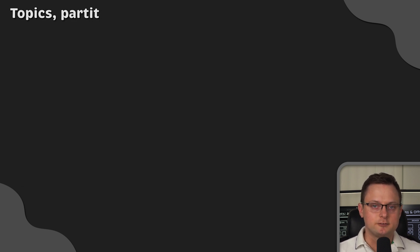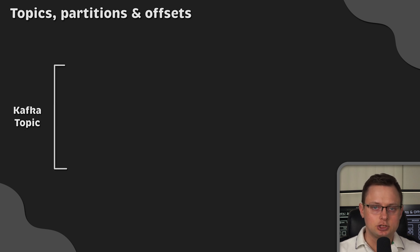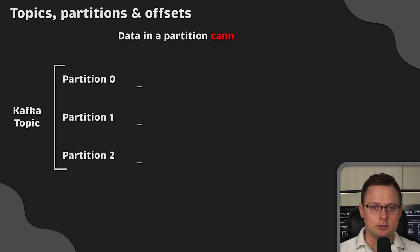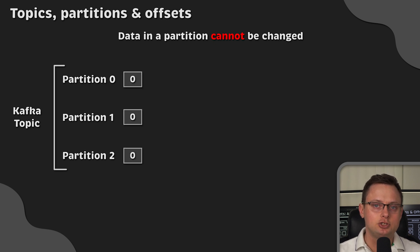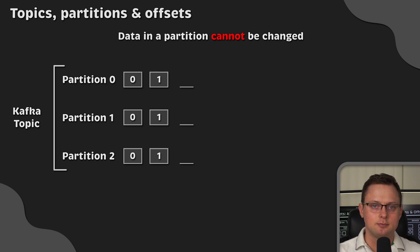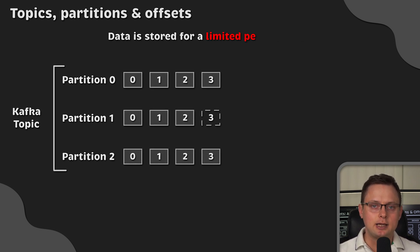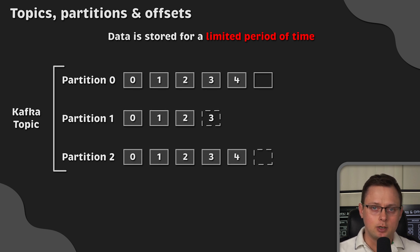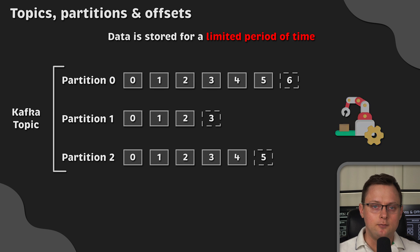Let's take note of some important things about topics, partitions, and offsets. Once data is written in a partition, it cannot be changed — this is referred to as immutability. Data in Kafka is only kept for a limited time; the default is one week, but this can be configured. That means after a week, your data will disappear.